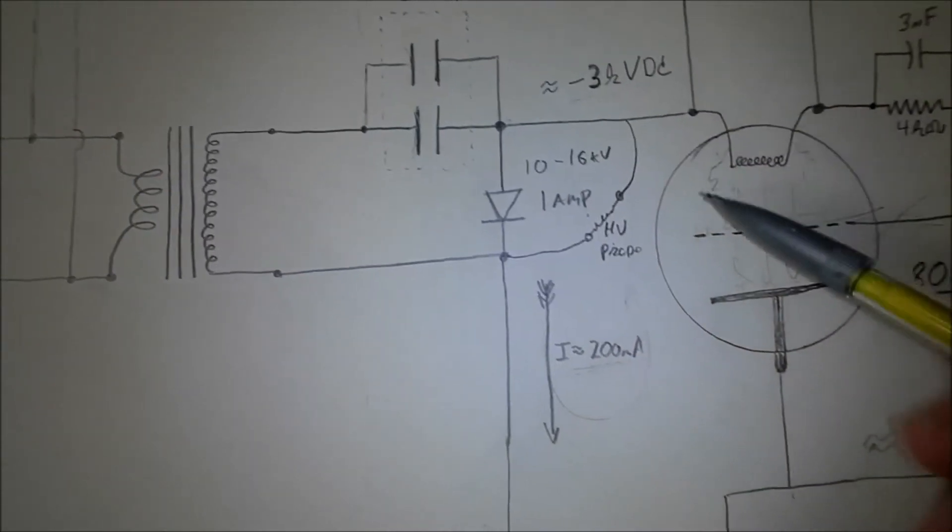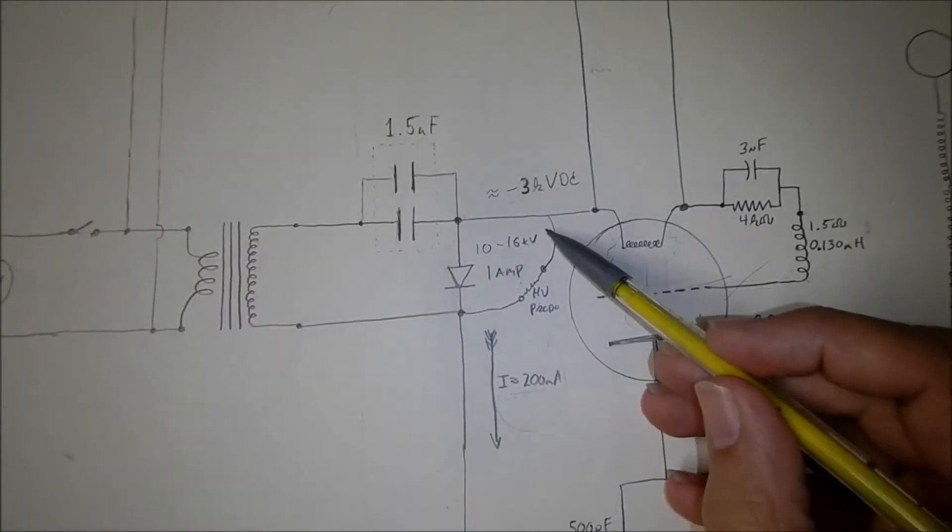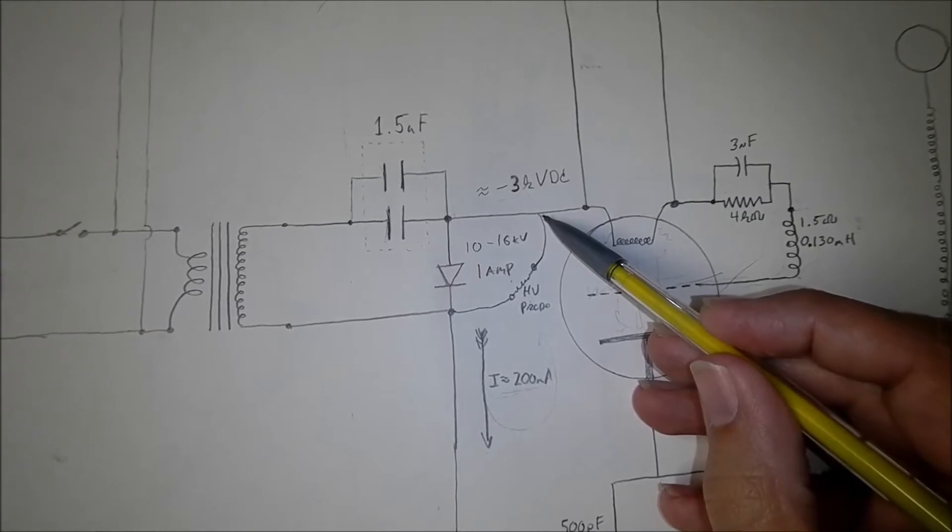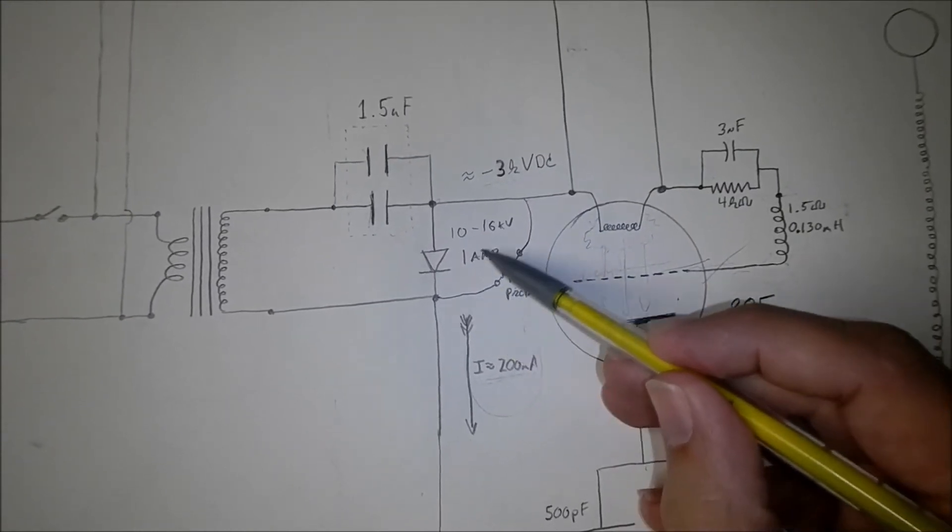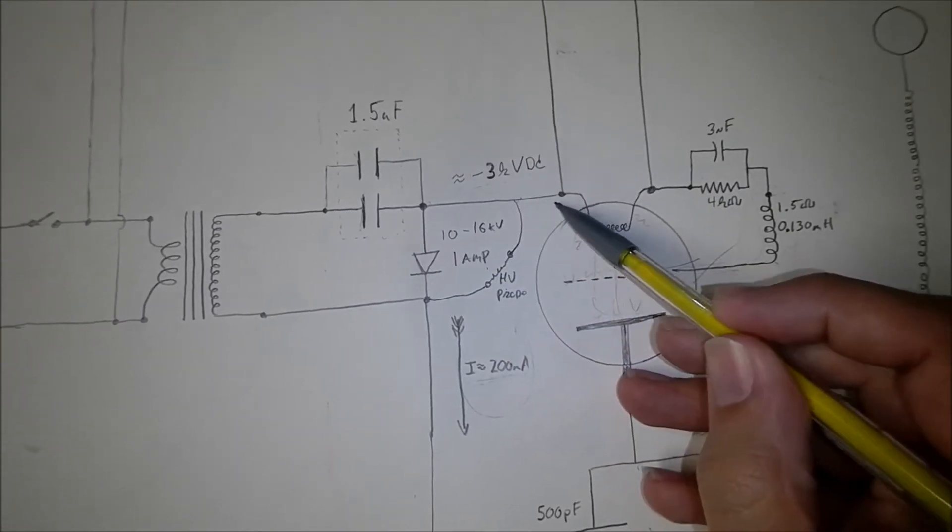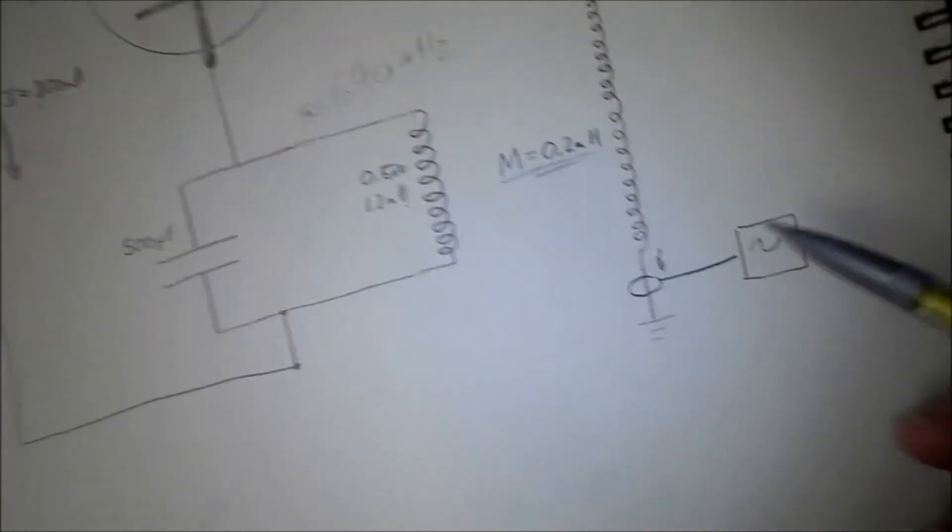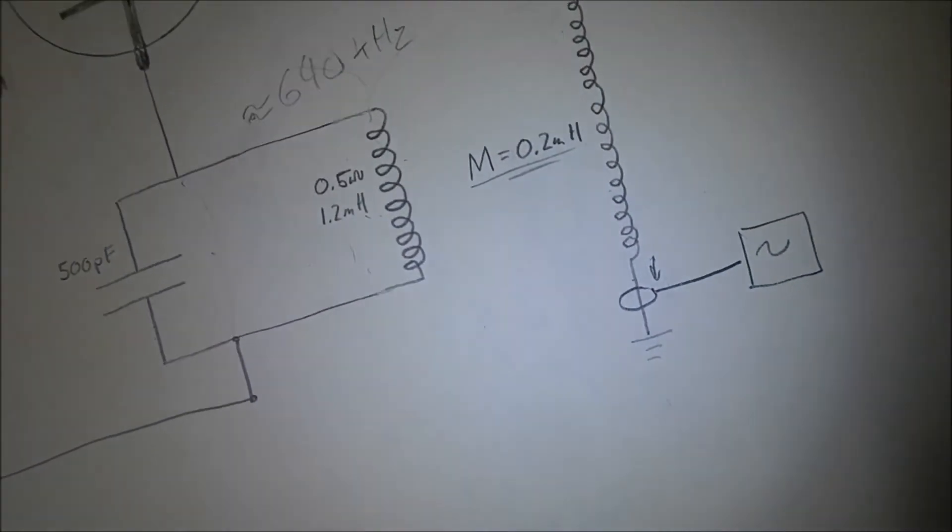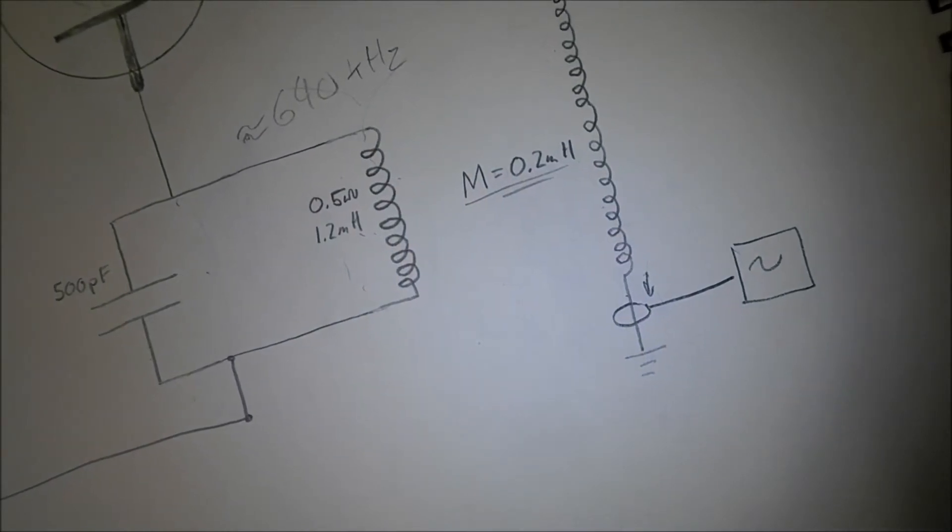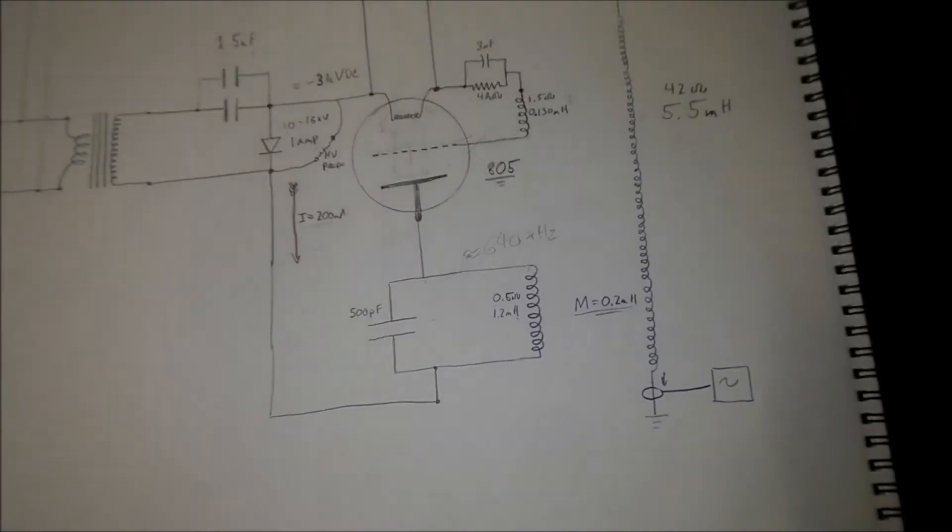So we're going to be able to, on the oscilloscope, see the power signal that is feeding the tube. And we're going to be able to see the currents from the oscillating Tesla coil on the oscilloscope.